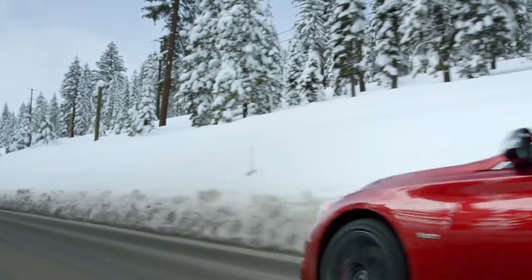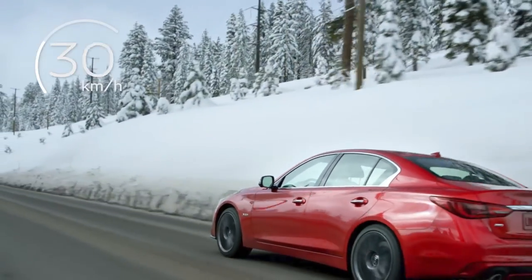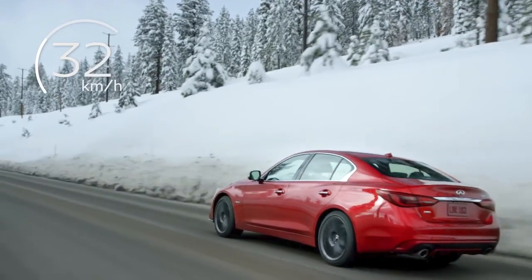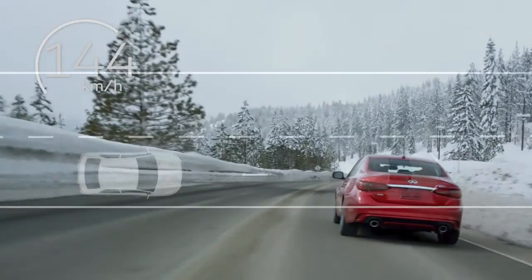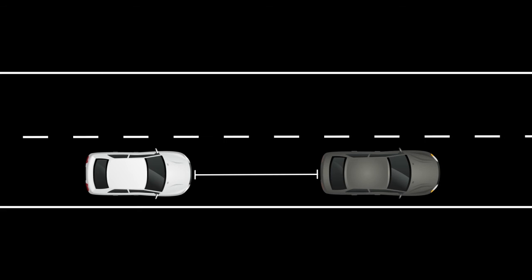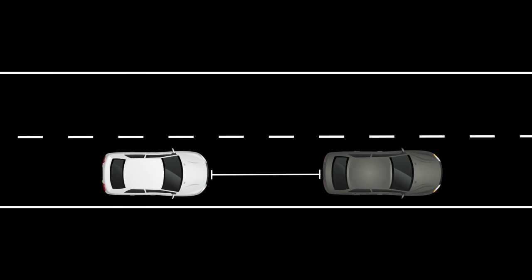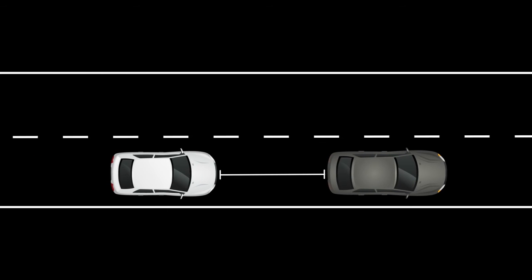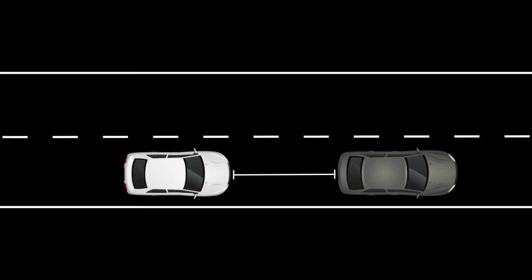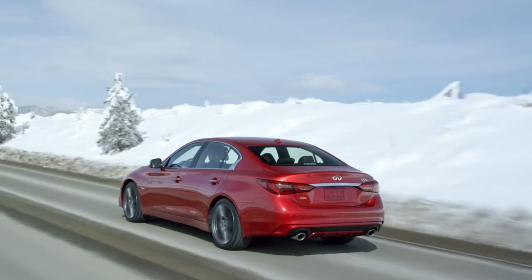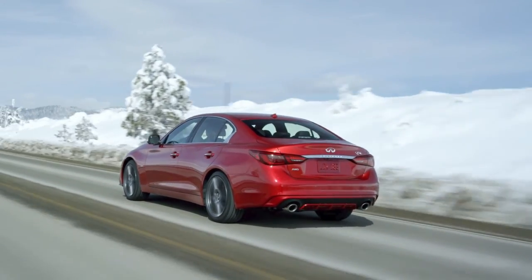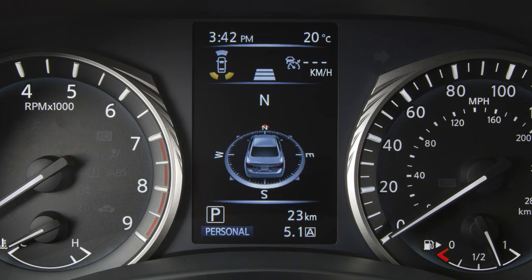When traffic is clear, the ICC will maintain a set speed between 32 and 144 km per hour. If the vehicle detects a slower moving vehicle ahead, the ICC will lower your speed to match the slower vehicle. Once the road is clear again, the ICC will resume your set speed.